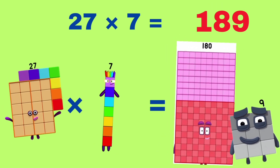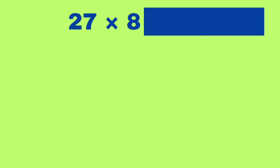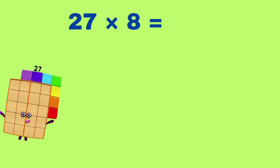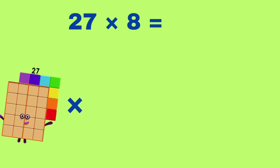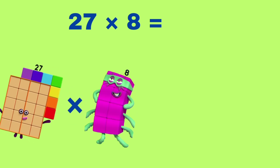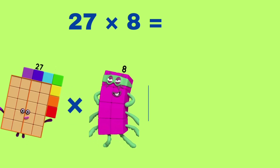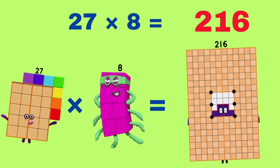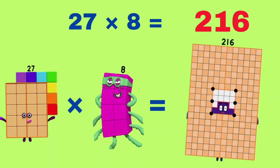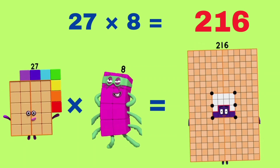27 multiplied by 7 is equals to 189. 189. 27 multiplied by 8 is equals to 216. 216.